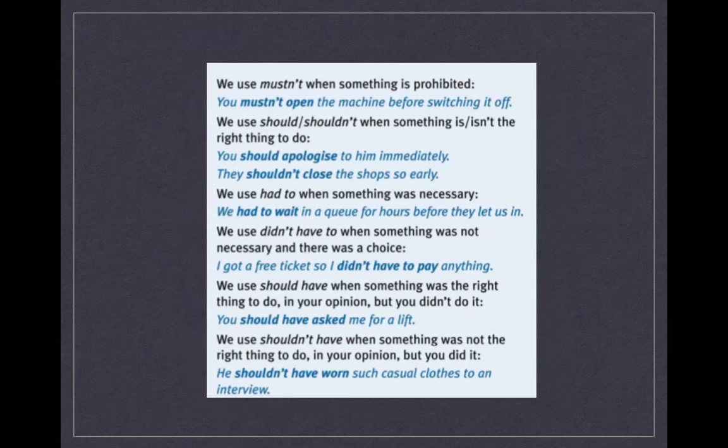We use had to when something was necessary: 'We had to wait in a queue for hours before they let us in.' We use didn't have to when something was not necessary and there was a choice: 'I got a free ticket so I didn't have to pay anything.' We use should have when something was the right thing to do but you didn't do it: 'You should have asked me for a lift.' We use shouldn't have when something was not the right thing to do but you did it: 'You shouldn't have worn such casual clothes to an interview.'